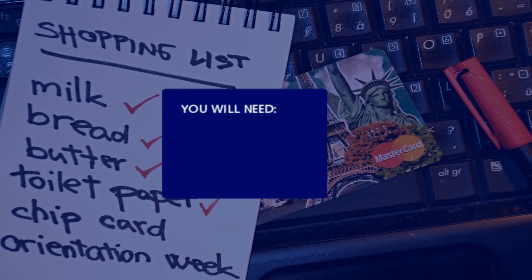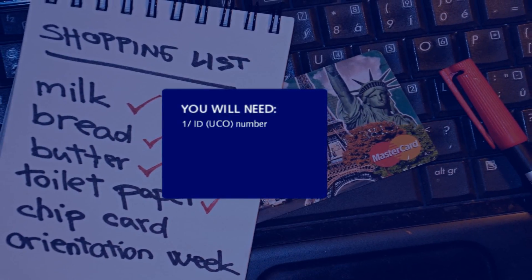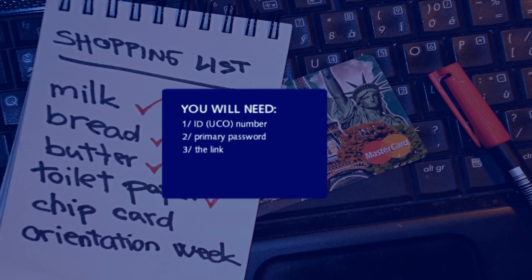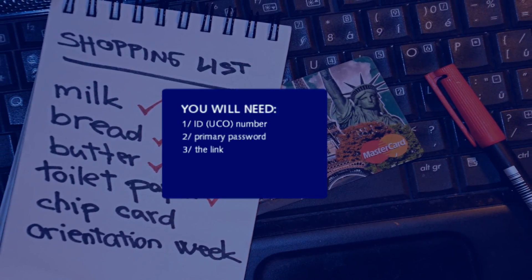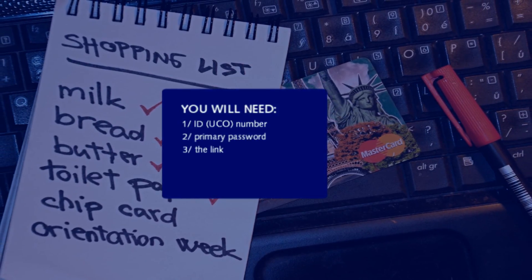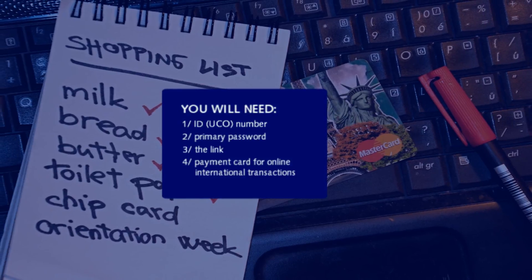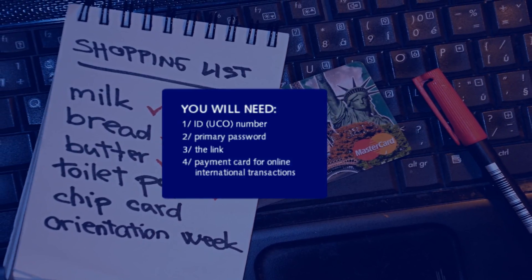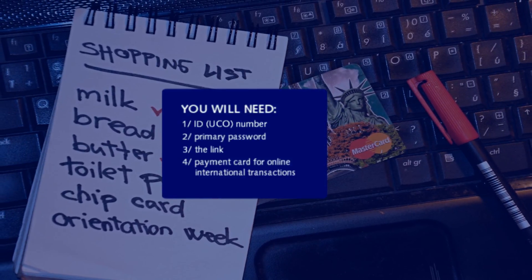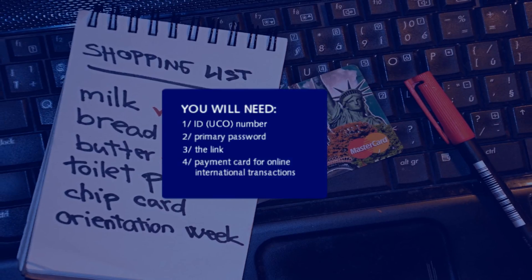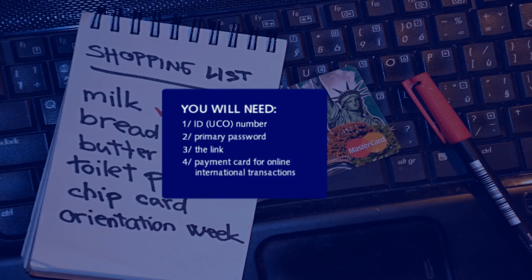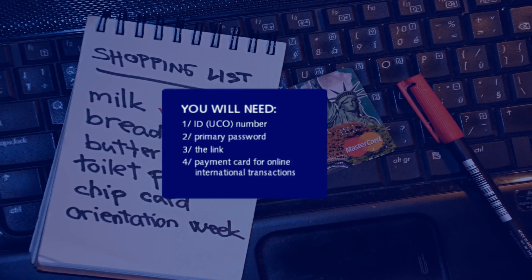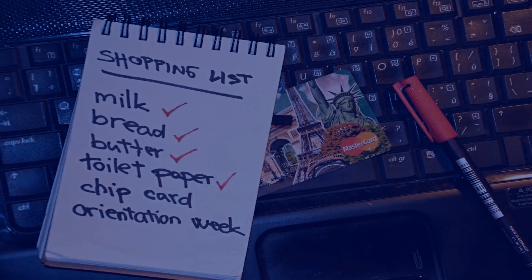You will need your ID number, your primary password, the link you've received by email before your arrival, a payment card for online international transactions (which does not have to be in your name — just make sure you have permission to use it), and an active SUPO account.